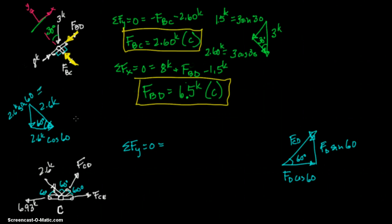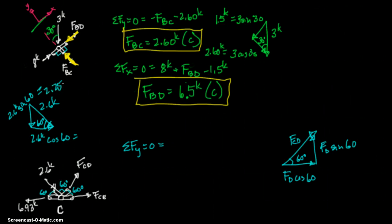This is going to be the cosine of 60. And this is going to be 2.6 kips cosine 60. And they equal 2.25 kips. And then this equals 1.3 kips. So we're looking in the Y direction. We want to look at right here. So that's our Y component, which is a negative 2.25 kips.